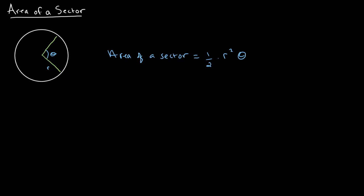The area of our sector — which is this shaded area over here — can be calculated using the equation one half times r, or the radius of our circle, squared, multiplied by the angle or theta of our sector.